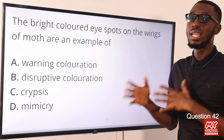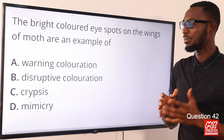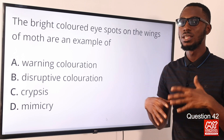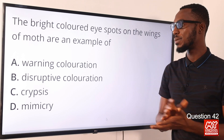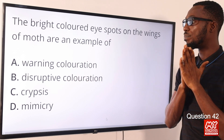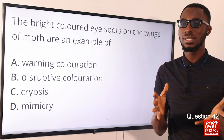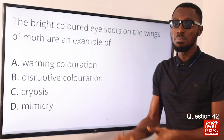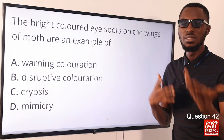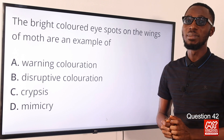Crypsis refers to blending with the environment — very similar to camouflage. Disruptive coloration is seen in leopards, where the spots prevent prey from detecting the predator's presence. Warning coloration signals to the predator that the organism has unpleasant features — probably a foul smell like a skunk or a painful sting like a wasp. The correct option is option D for mimicry.